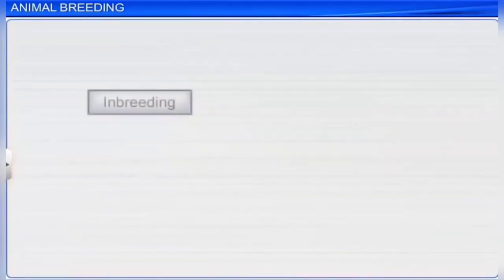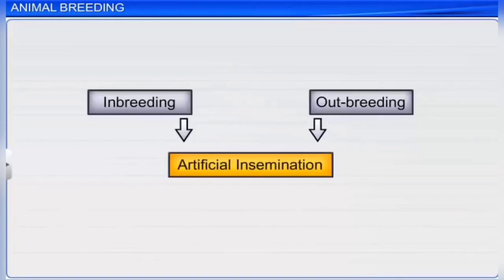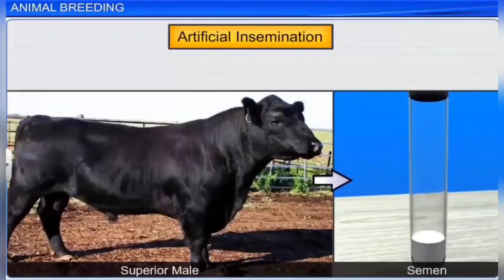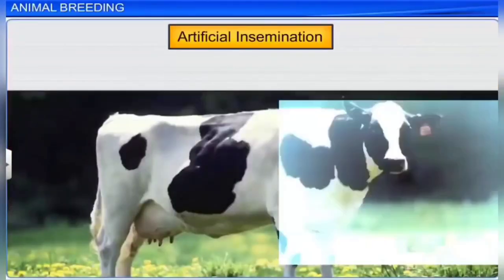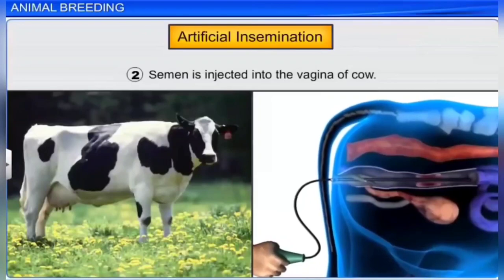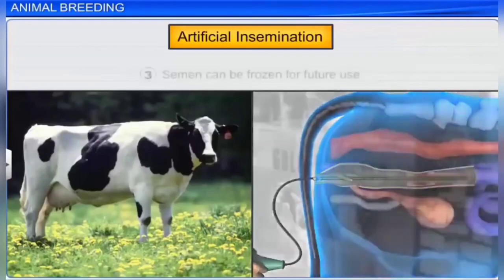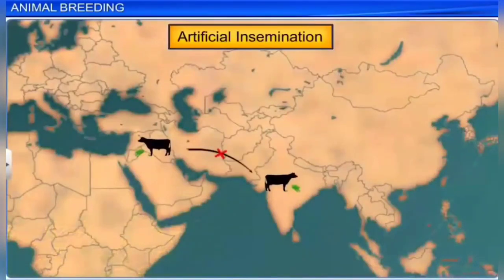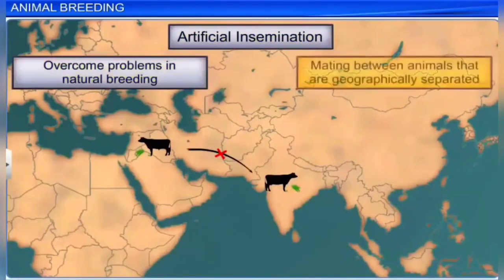Both inbreeding and outbreeding can be carried out using controlled breeding experiments. Artificial insemination is one such method — semen is first collected from the superior male, then injected into the reproductive tract of the female animal, or frozen for future use. Artificial insemination overcomes problems in natural breeding and allows mating between geographically separated animals. However, the success rate of artificial insemination is relatively low.